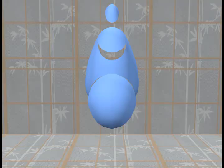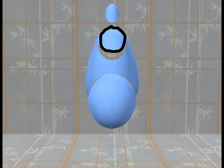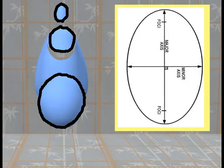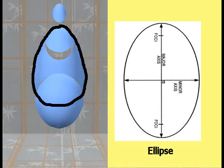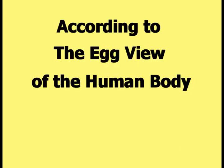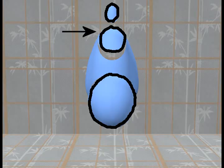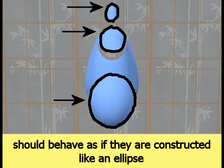This picture shows the profile view of the human body shape created from the egg. The arm, the leg, and the head all have an elliptical shape because they were cut from the elliptically shaped egg. According to the egg view of the human body, this picture is saying that the arms, the legs, and the head should behave as if they are constructed like an ellipse.